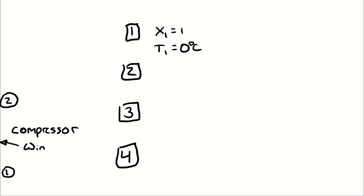At state 2, the entropy equals that at state 1, because we assume an isentropic compression process unless given information such as an isentropic efficiency to deduce otherwise. Furthermore, the process from two to three is isobaric, so if we can look up the pressure at state 3, that also fixes the pressure at state 2.